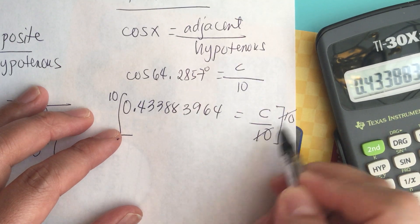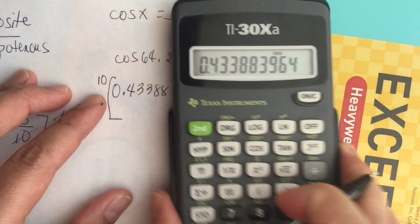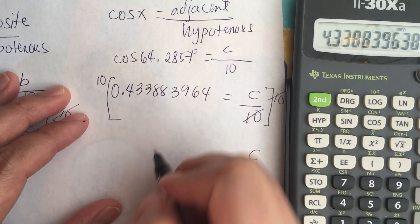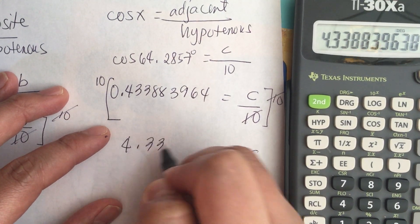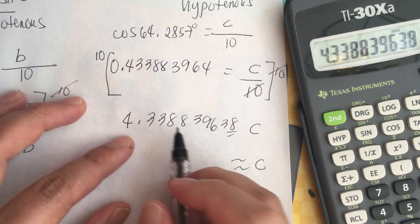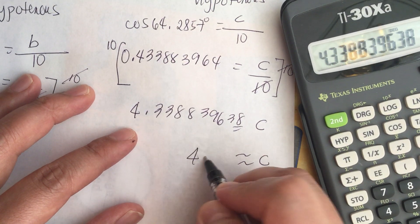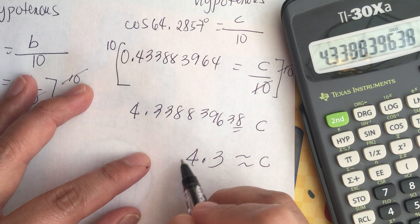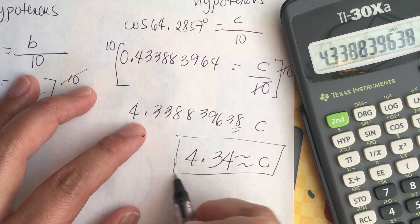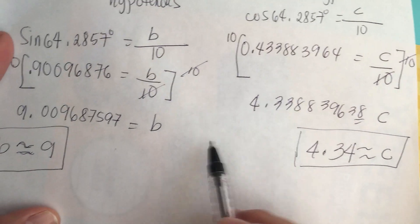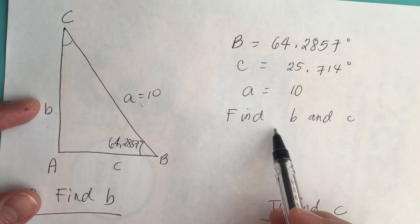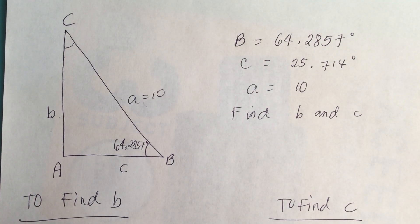So C equals 10 times 0.433883964, giving us 4.338839638, which is approximately 4.34 keeping two decimals. So here are the answers: C is equal to 4.34, and B is equal to 9. We've answered the problem. Thank you.